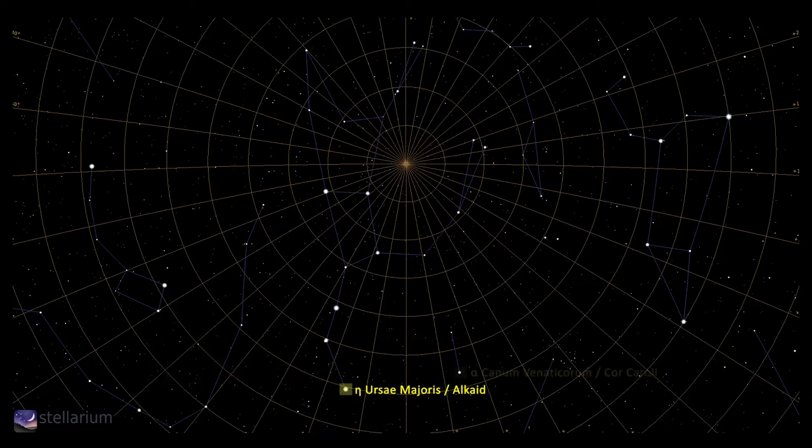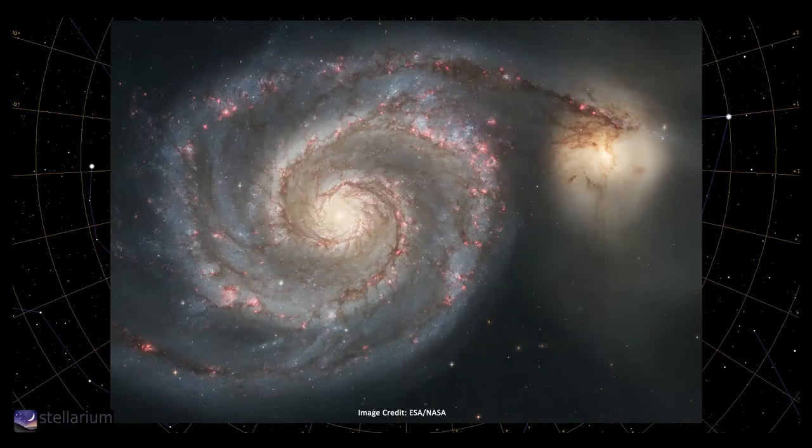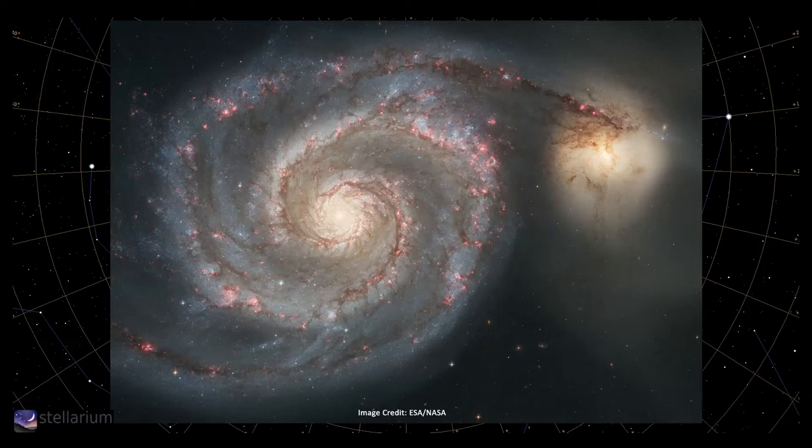Now draw a line between Alkaid and Cor Caroli in the constellation Canes Venatici to the right of Ursa Major. About a quarter of the way along that line and roughly half a degree above that point sits another unique wonder for amateur astronomers: Messier 51, the Whirlpool Galaxy. So named because you see a face-on spiral galaxy devouring another smaller galaxy that strayed too close. It's visible in a four-inch scope, but the view through an eight-inch scope will blow your mind. Where else can you see something as awe-inspiring as two galaxies colliding with your own eyes from your own garden?